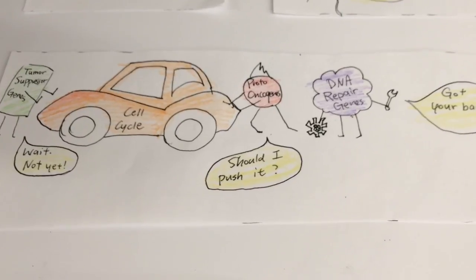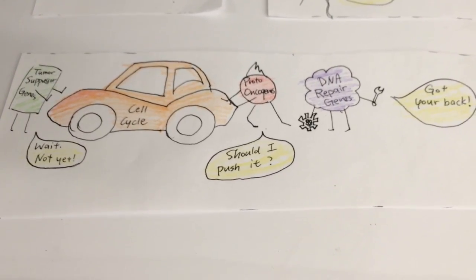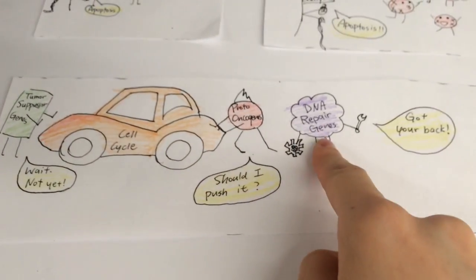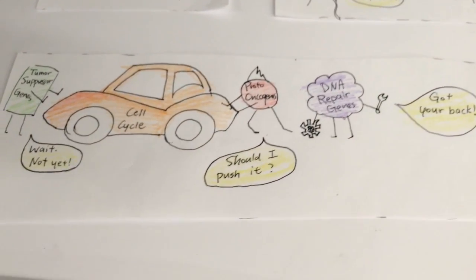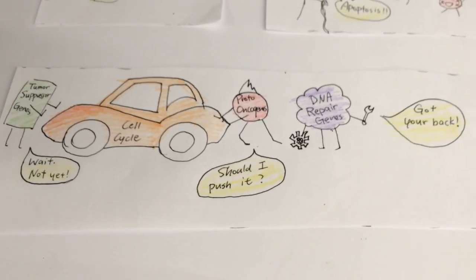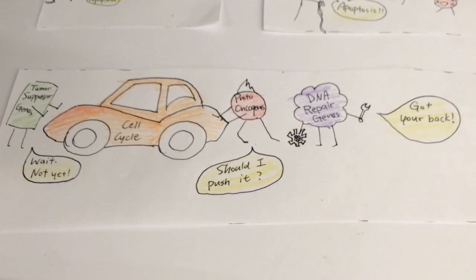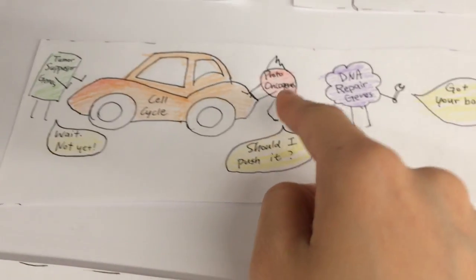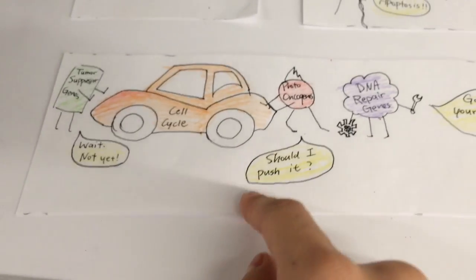A properly working car needs the gas pedal to drive, needs a brake to stop, and would need occasional stops to the car repair place to make sure the first two functions work. The same thing goes for the cell cycle. Proto-oncogenes are like the gas pedal, which stimulates the rate of the cell cycle, encouraging division when needed.